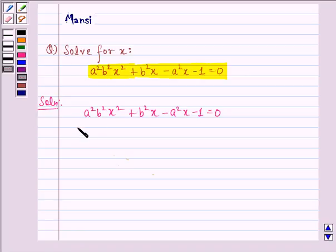So, this can be written as b square x into a square x plus 1 minus 1 into a square x plus 1. This we get by factorization.